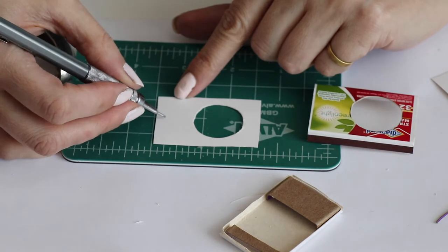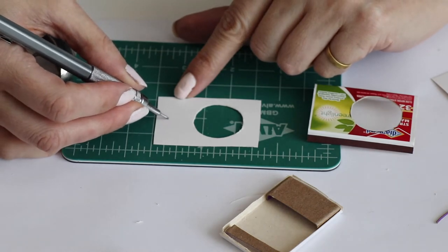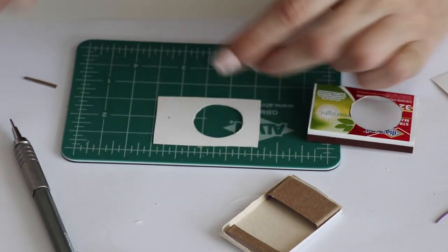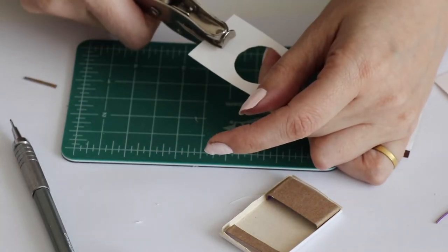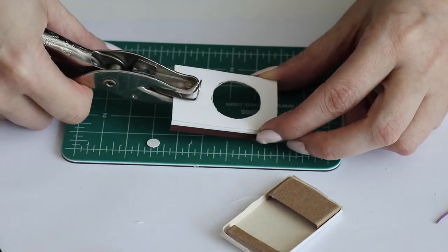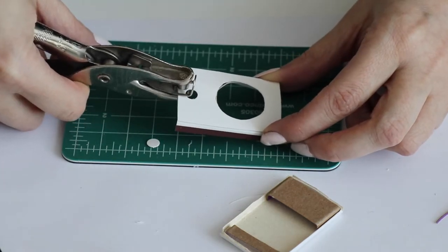Mark where the opening will be for the gumballs. It will need to be close enough to the bottom of the box so that another hole the same size can fit on top of it under the window. Use a hole punch to punch it out. Use this as a stencil to punch the top of the box to match.